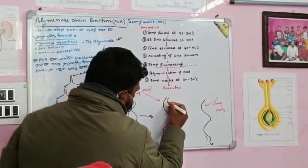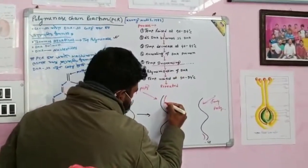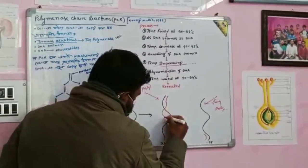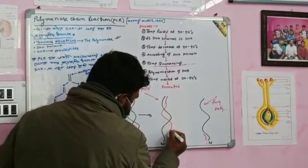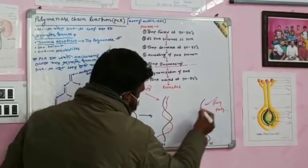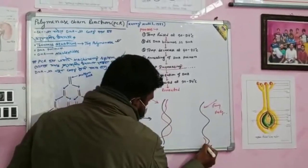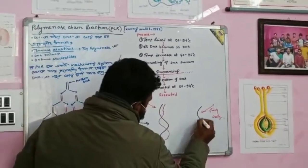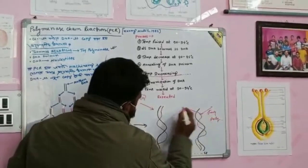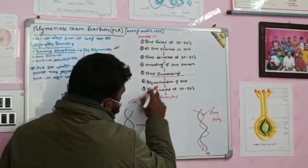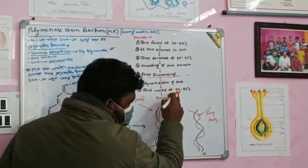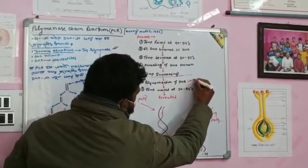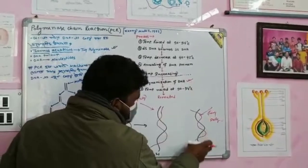This is the first step of the PCR cycle, which is the first step of the process. If you don't understand the world, you can't see the world on the revolution. And you can't see it.